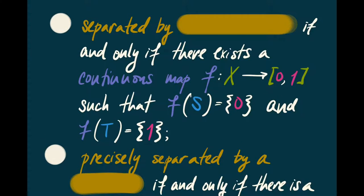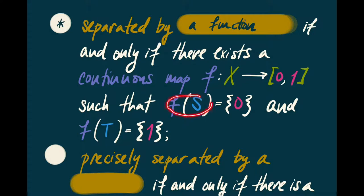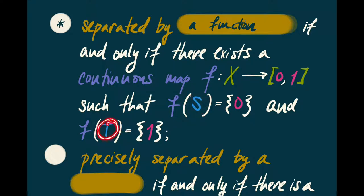An even stronger condition is to be separated by a function. We say S and T are separated by a function if and only if there exists a continuous map from X to the closed interval [0, 1] such that all of the points of S go to 0 and all of the points of T go to 1. I'm not saying other points can't go to 0 — some other points can — but at least the points of S must go to 0, and at least the points of T must go to 1.